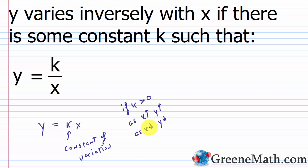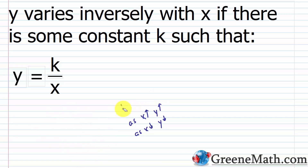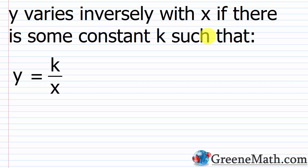Now we're going to talk about another scenario called inverse variation. The concept is the same: y varies inversely with x if there is some constant k such that y equals k over x. Again, k is called the constant of variation.